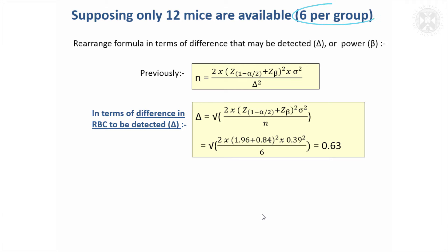If there were just six mice available per group, if we turned that formulae around we would end up with this formulae, just rearranging it. We could say that the difference we'd be able to detect if we just had six mice per group, and we'll still go for 80% power, it would be 0.63. So we couldn't detect a difference of 0.5, but with 80% power we could detect a difference of 0.63 if that was the underlying difference.